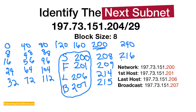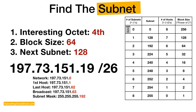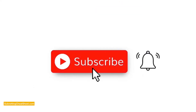So that is how you can quickly subnet anything. Find the interesting octet, locate the block size using your four column subnetting cheat sheet, and then find the subnet from the block size. It looks like a lot because I'm walking you through step by step, but it's very simple. I'll include some exercises and other videos so you'll quickly be able to subnet anything using these three pieces of information. Please subscribe — I'm going to be uploading more subnetting videos so you can keep practicing and not lose the skill.